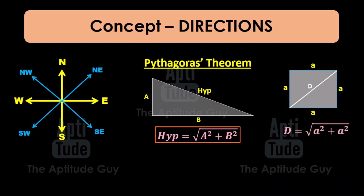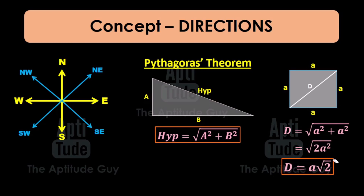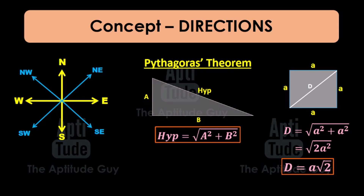Using the Pythagoras theorem, diagonal equals √(a² + a²) = √(2a²) = a√2. A lot of people make a mistake — they simply cancel out the root and the square, but that cannot happen here because the square is part of 'a' only, not the whole thing. If you break it down: √2 × √(a²) = √2 × a = a√2. That is the final formula. We will use this formula in a few questions.